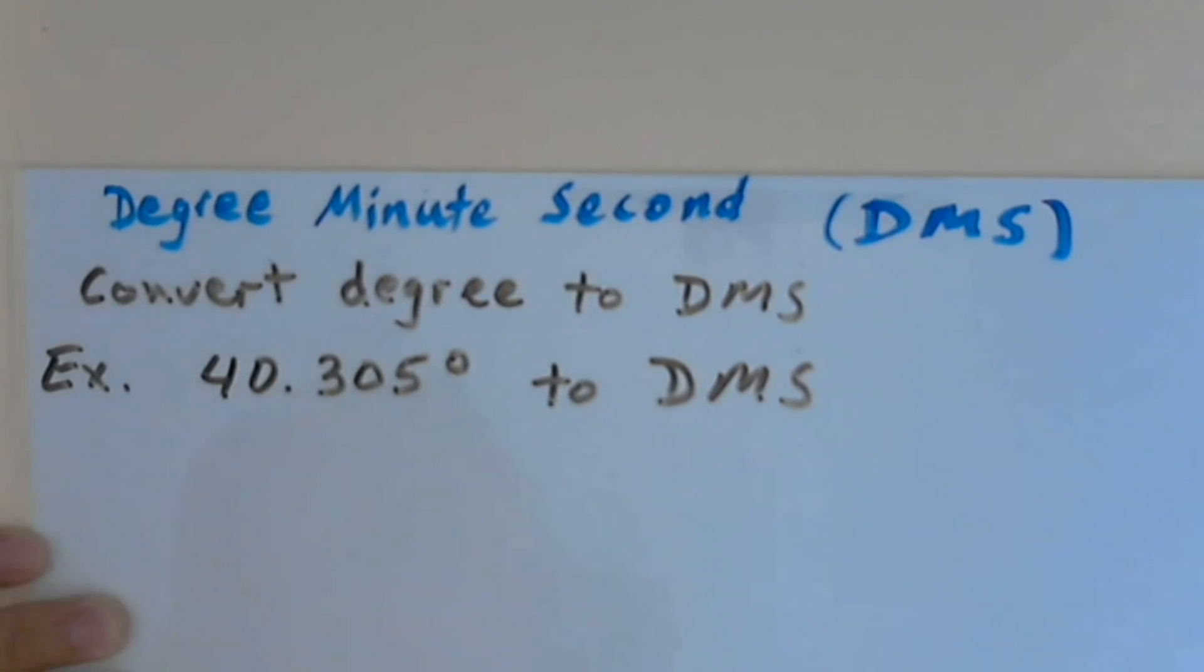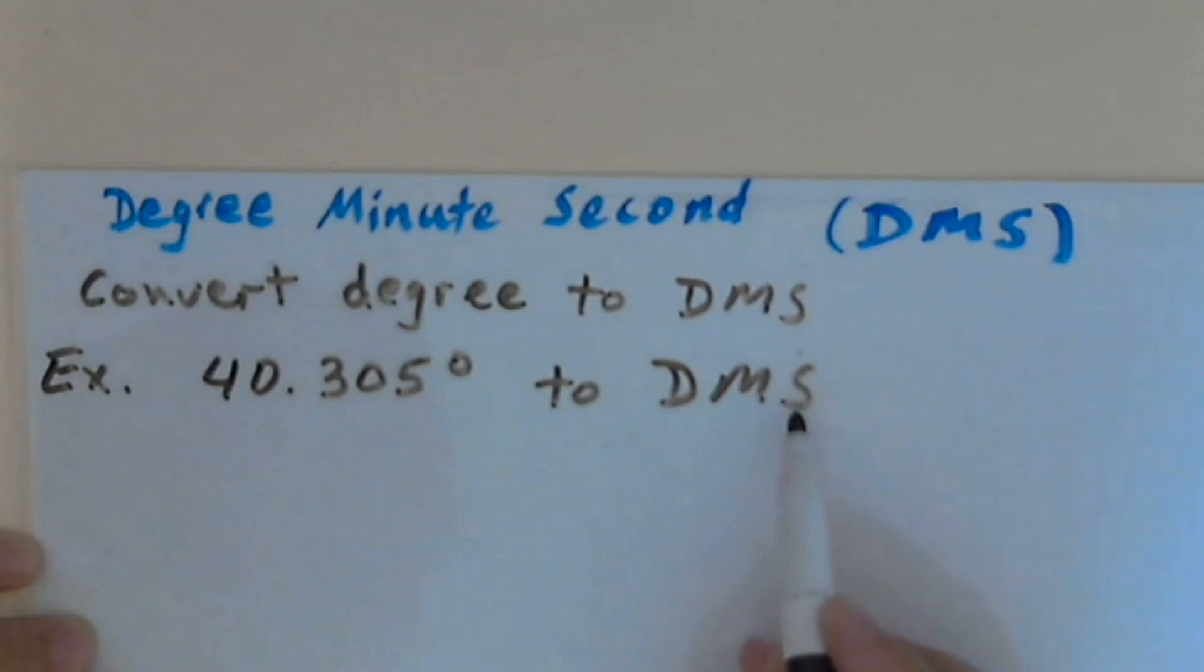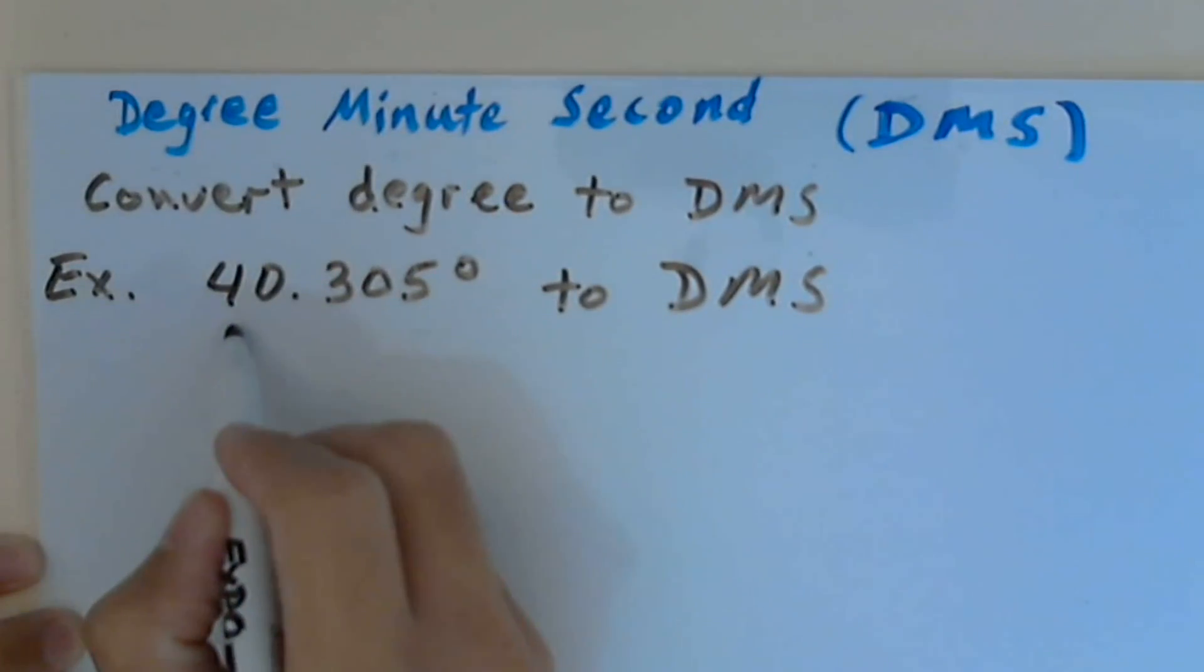Hi, welcome to my video. Today I want to show you how to convert degrees to degrees minute second, abbreviation DMS. Here my example is 40.305 degrees. I want to convert this number into degrees, minutes, and seconds.